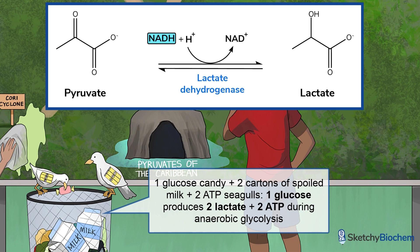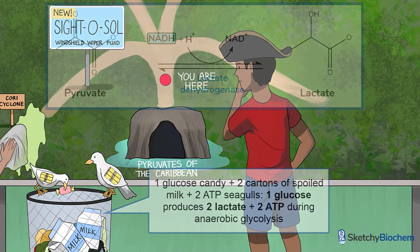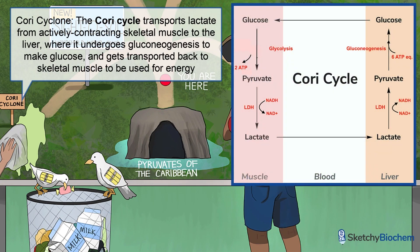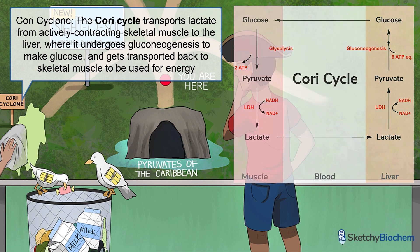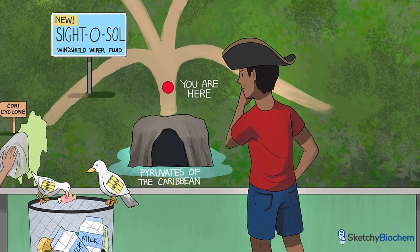Unfortunately, skeletal muscle fibers can't directly metabolize lactate nor convert it into glucose via gluconeogenesis because they don't have the enzyme glucose-6-phosphatase, which is needed to turn glucose-6-phosphate into glucose. The Cori cycle solves this problem by transporting lactate from actively contracting skeletal muscle to the liver, where it undergoes gluconeogenesis to make glucose and gets transported back to skeletal muscle to be used for energy. It also makes for a hell of a rollercoaster ride.